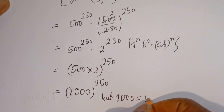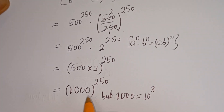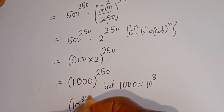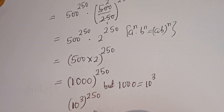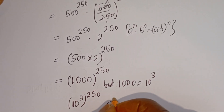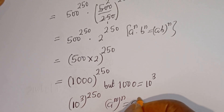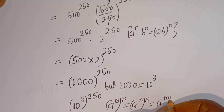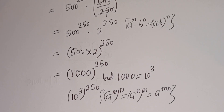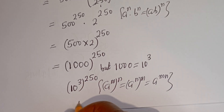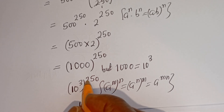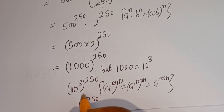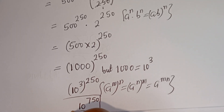Now, 1000 is equal to 10 to the power of 3, so this can be written as 10 to the power of 3, to the power of 250. Also know that if you have a to the power of m to the power of n, this equals a to the power of m times n. Therefore this can be written as 10 to the power of 3 multiplied by 250, that is 10 to the power of 750. And this is the final answer!